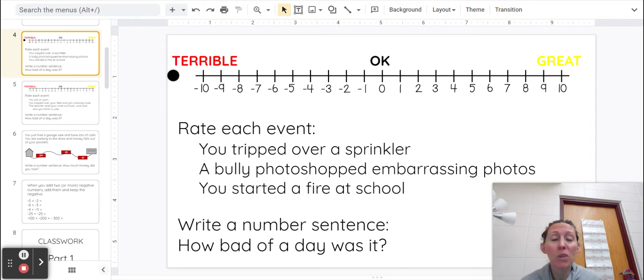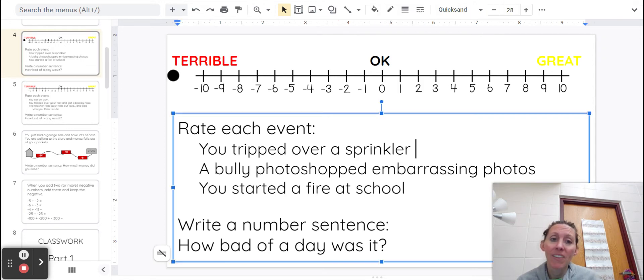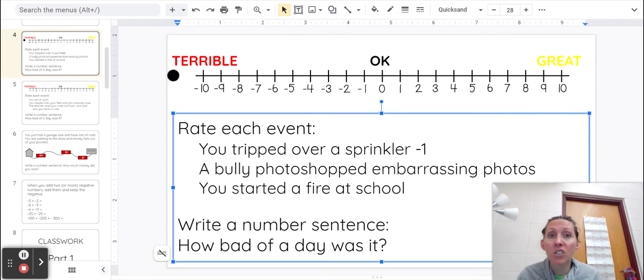Alright, so let's say in one day, there's three bad things that happen. Okay, so we're going to rate each of these things. So the first thing is you trip over a sprinkler. Kind of sucks, you get a little bit wet, but it's just water, you'll dry off.